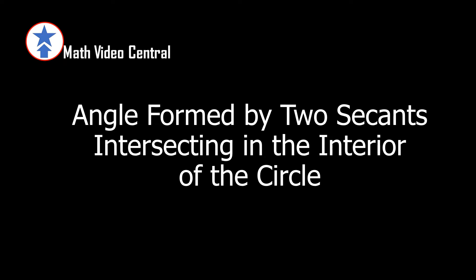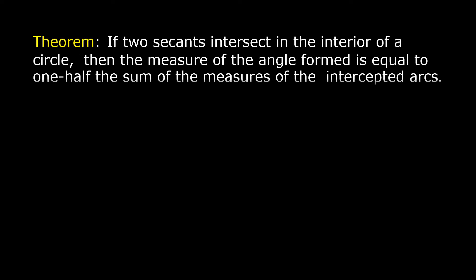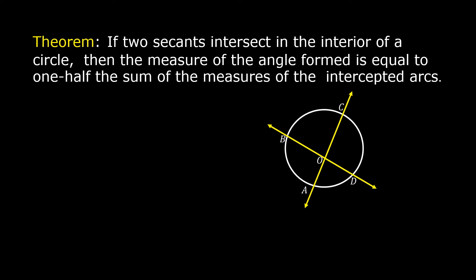This is today's lesson: angle formed by two secants intersecting in the interior of a circle. Let us read the theorem. If two secants intersect in the interior of a circle, then the measure of the angle formed is equal to one-half the sum of the measures of the intercepted arcs.